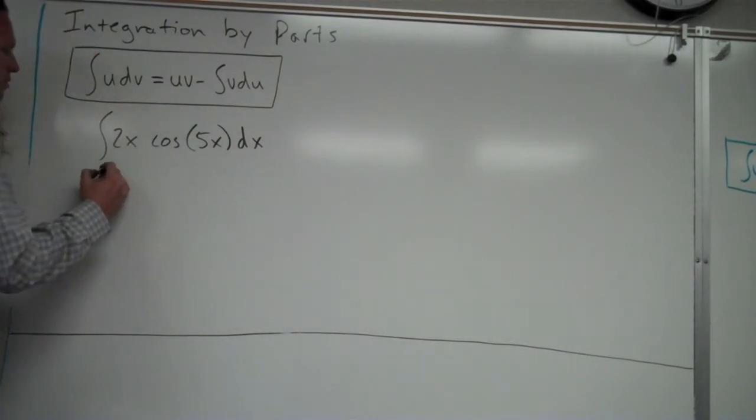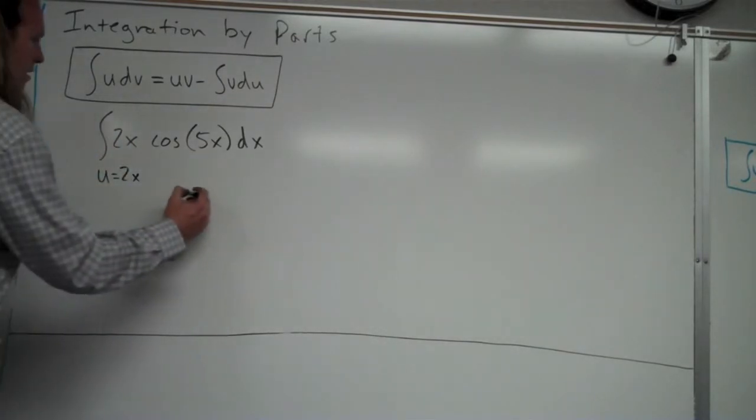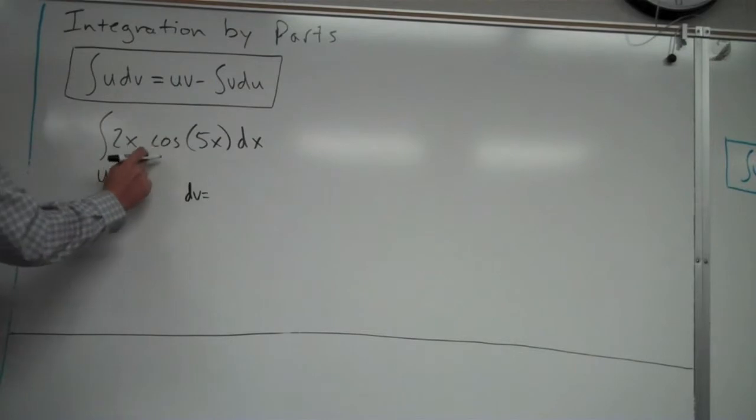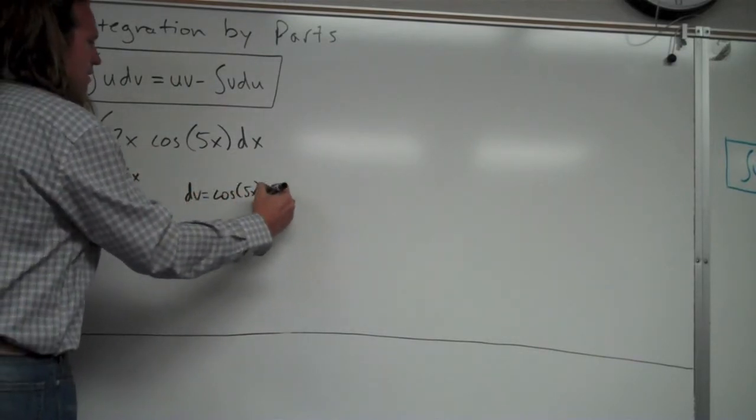So in this case you're going to want u to be equal to 2x since that simplifies. If I let u equal cosine, it's going to turn into sine and then it just kind of repeats in pattern. It doesn't ever simplify. dv is the rest of it. So in this case it's cosine 5x dx.